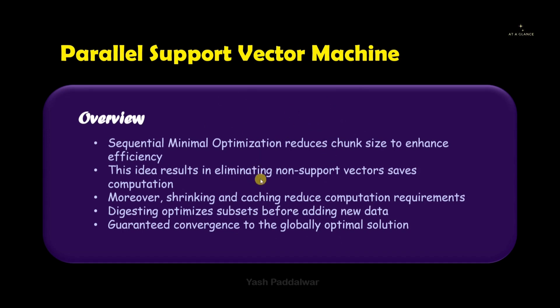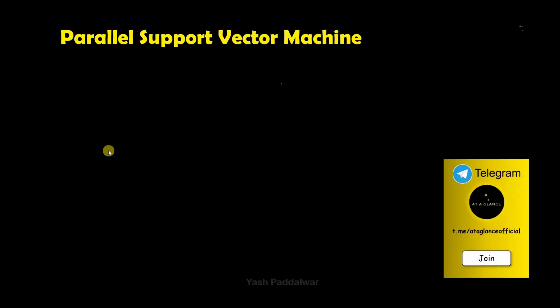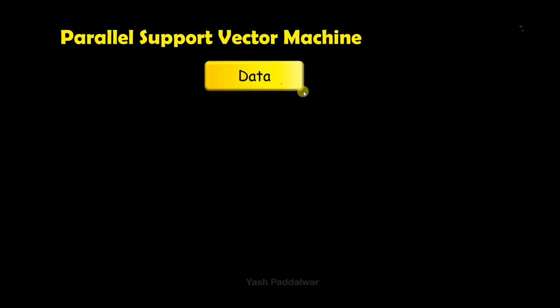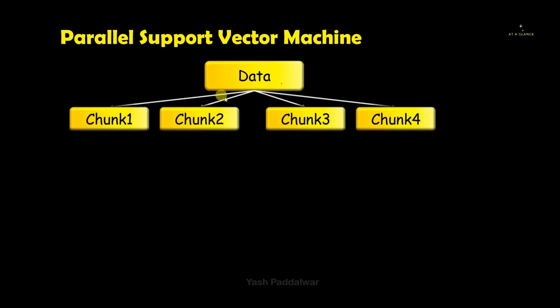I hope you now understand what parallel support vector machine is, and that the methods of shrinking, caching, and digesting are clear. Now we will see diagrammatically how parallel SVM computes the most optimal result even for big data. Let's say we have a big data set that is not only huge but very complex and enormous. If we directly apply SVM to it, the amount of computational resources required would be enormous. Instead, we apply parallel SVM to achieve the best results with fewer computational resources. The first step is to divide the entire data into chunks.